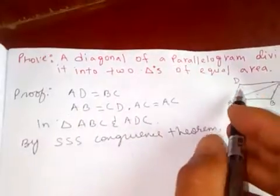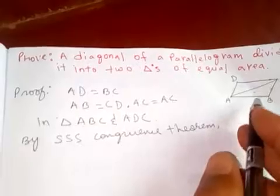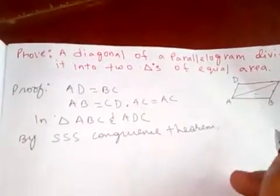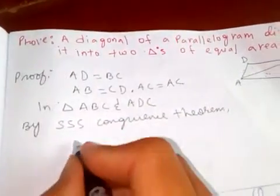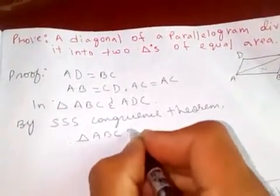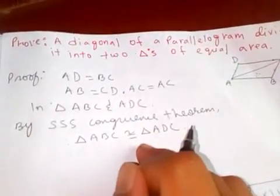according to SSS congruence, if all three sides of a triangle are equal, then these two triangles must be equal. Therefore, triangle ABC is congruent to triangle ADC. Congruent, in other words, means these two triangles are equal.